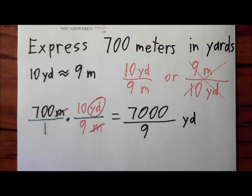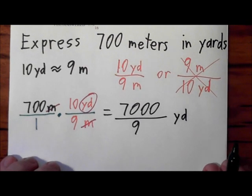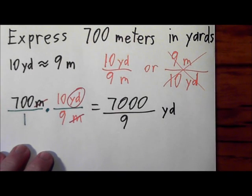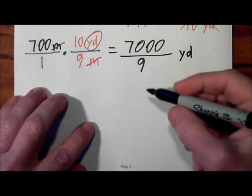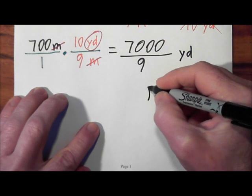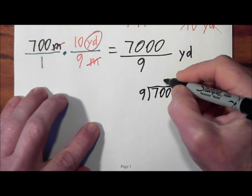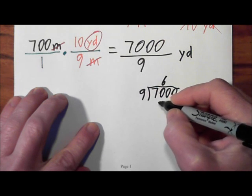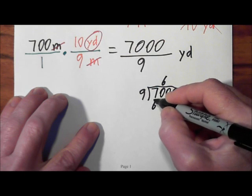In order to do that, this is 7,000 divided by 9. I might be running out of room here a little, so I have to push up. So here is 7,000 divided by 9. 9 times 9 goes into 70 6 times.